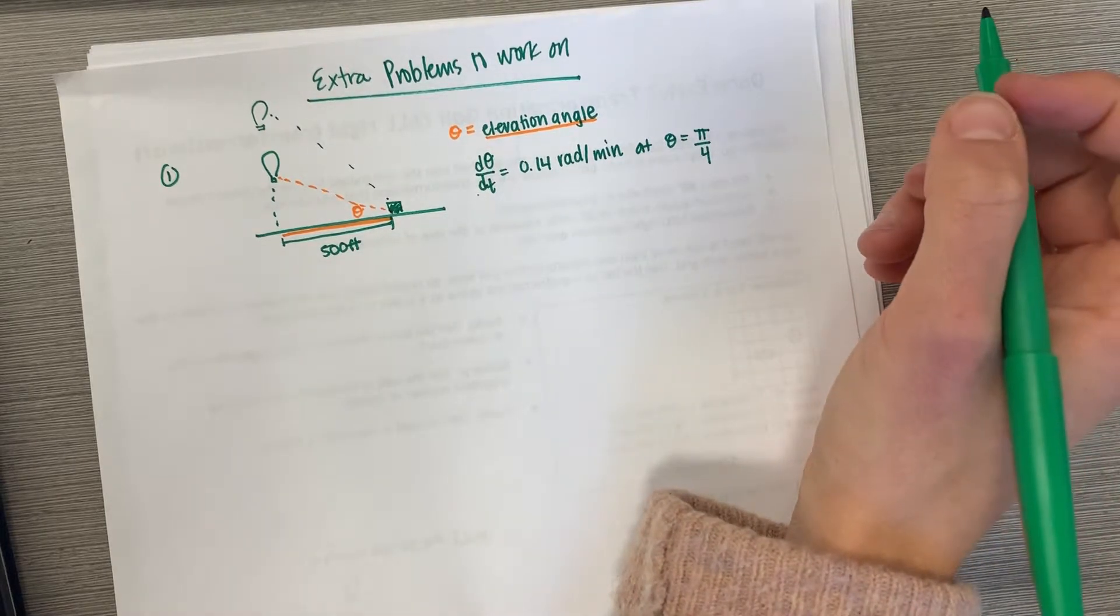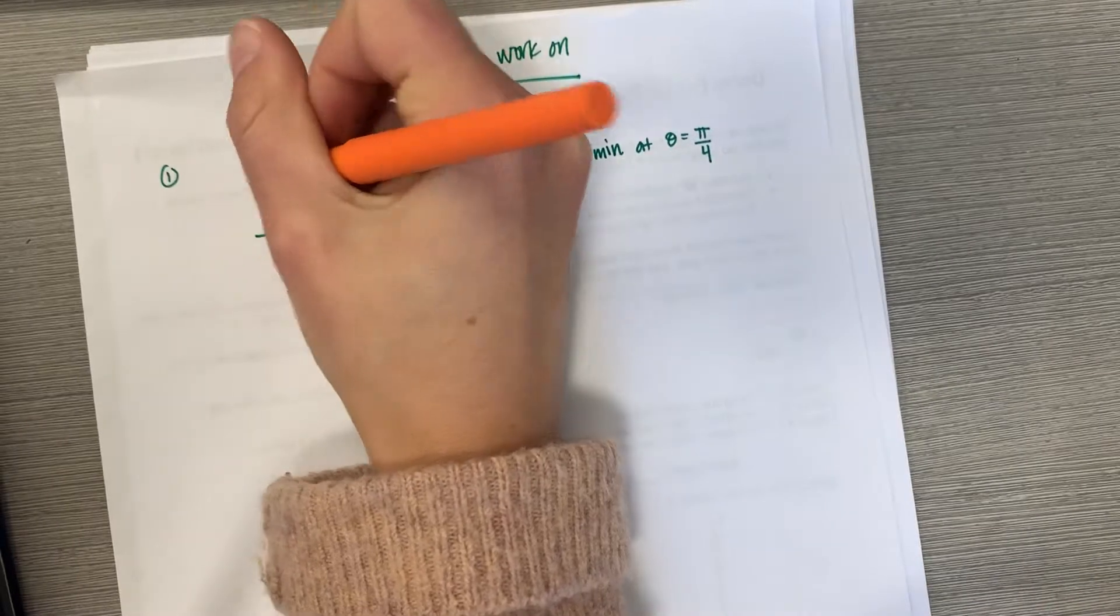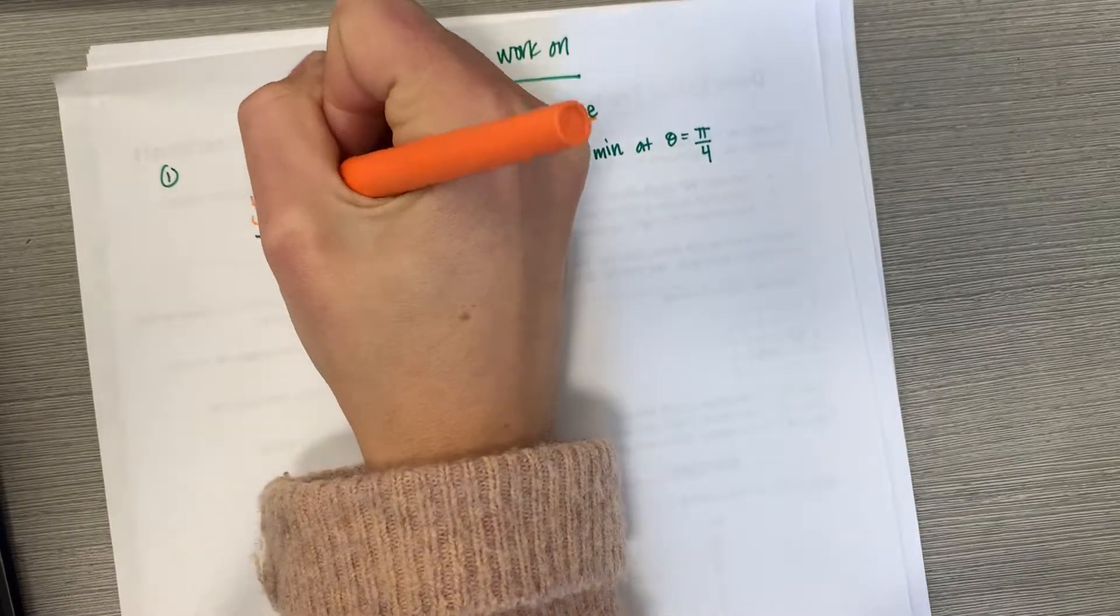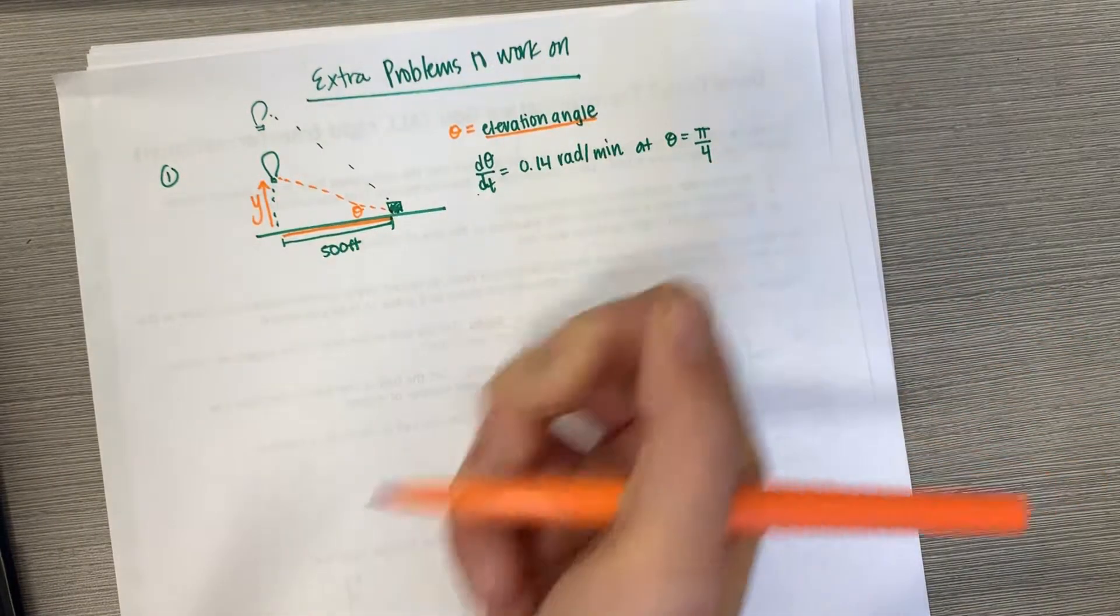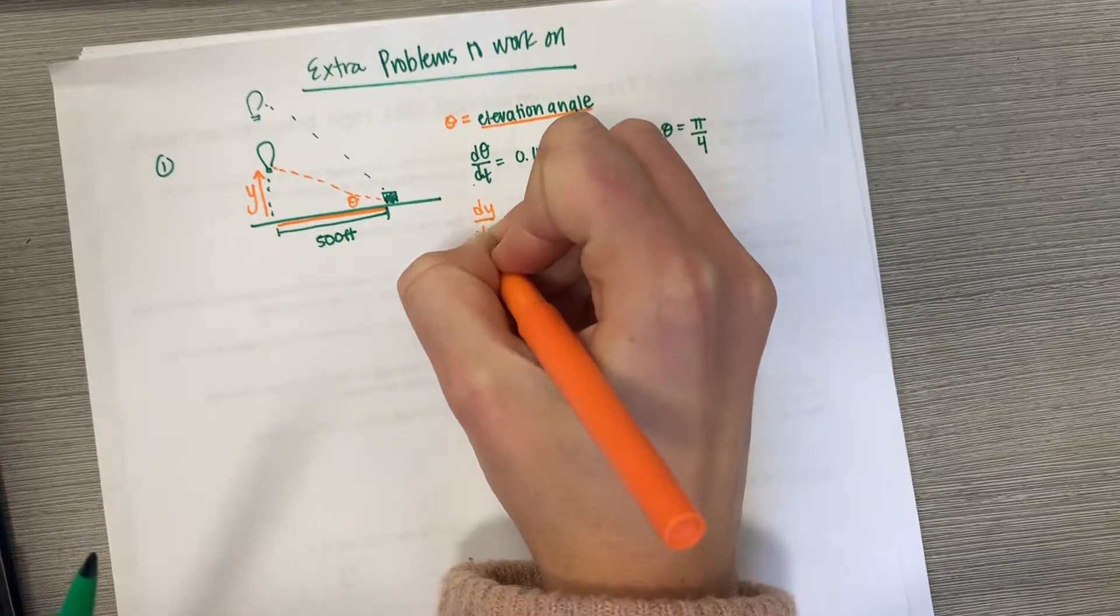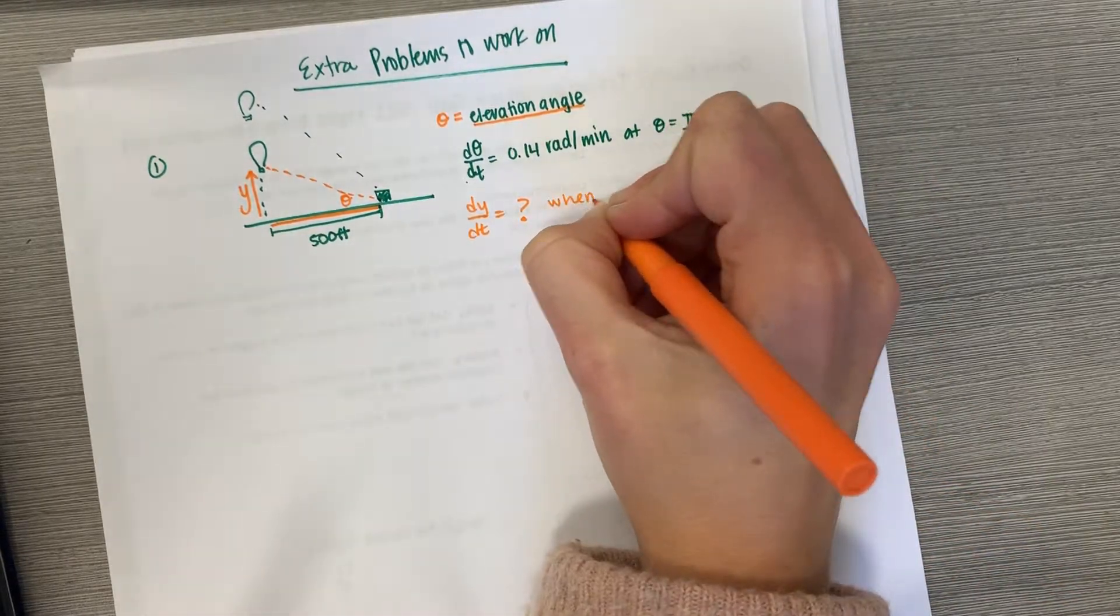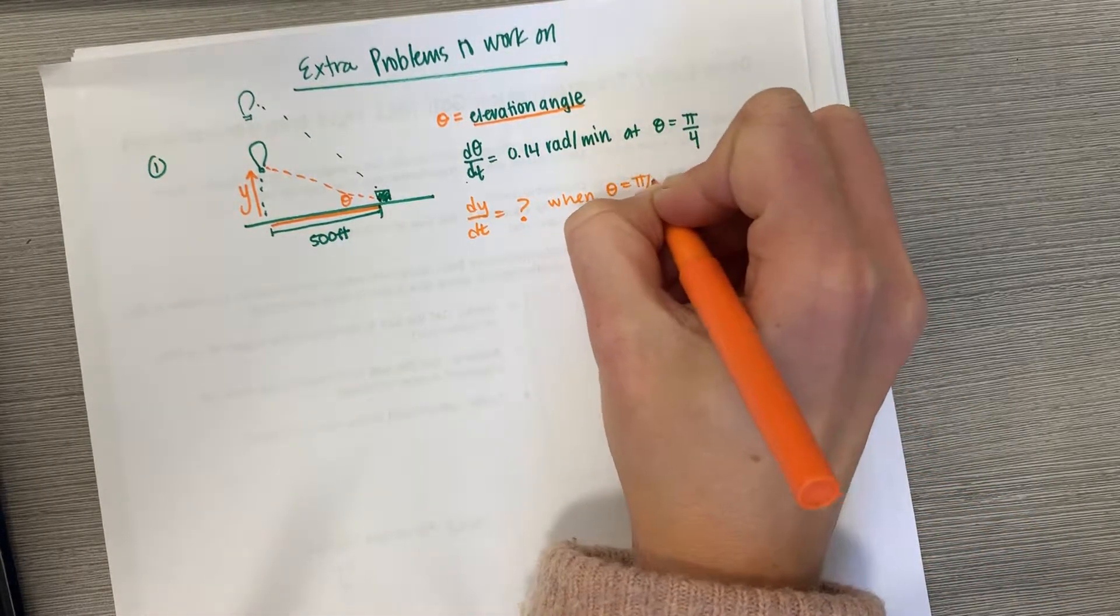How fast is the balloon rising at that moment? So what we want to know is y being our vertical distance, what is dy dt when theta equals pi fourths.